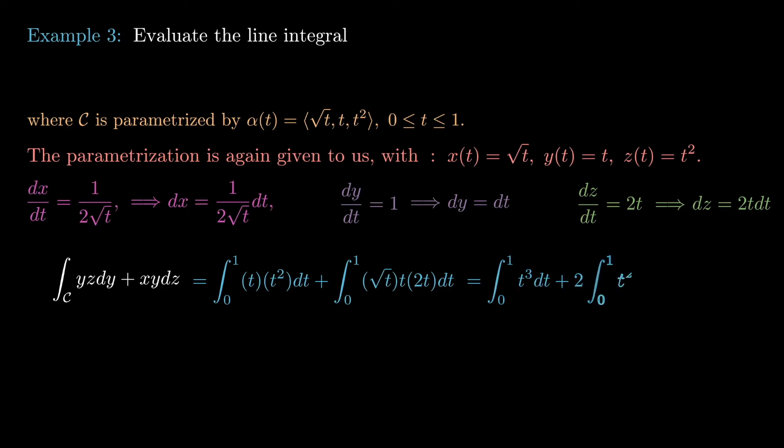Now let's simplify this expression. We get the integral from 0 to 1 of t³ dt plus 2 times the integral from 0 to 1 of t²√t dt. Elementary formulas tell us that this is just 23/8.